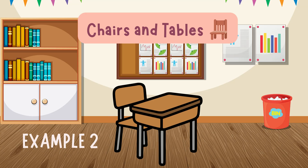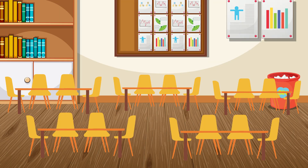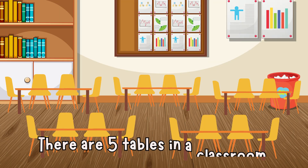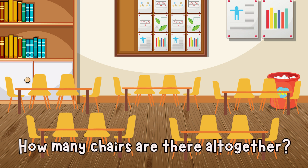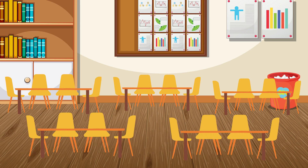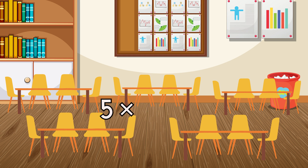Example two: Chairs and tables. Let's try another one. There are five tables in a classroom. Each table has four chairs. How many chairs are there all together? I see the word 'each' — that means multiply. Five times four equals twenty. There are twenty chairs in the classroom.